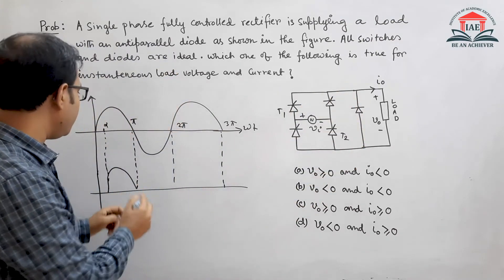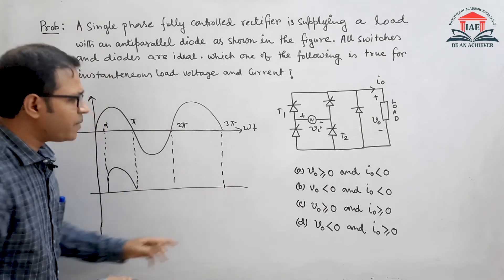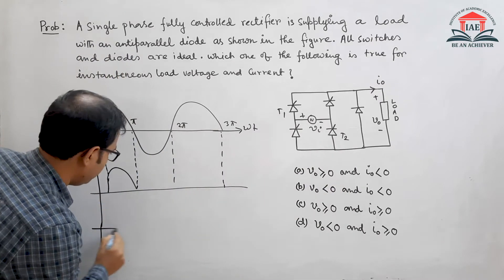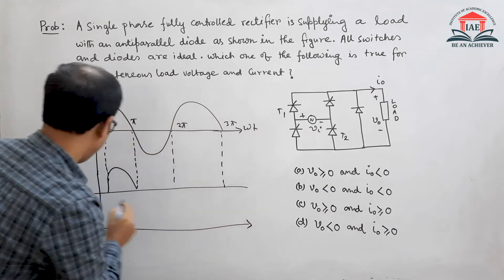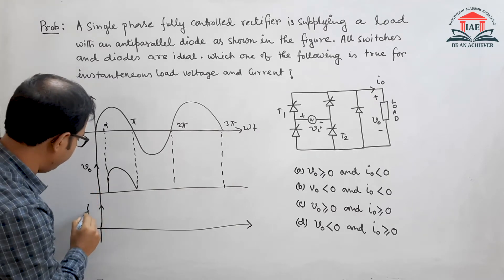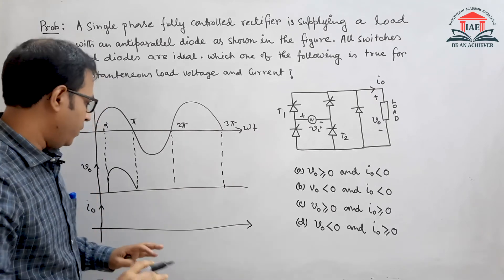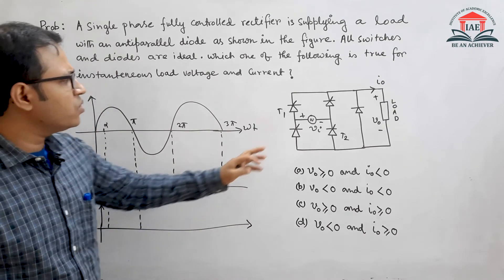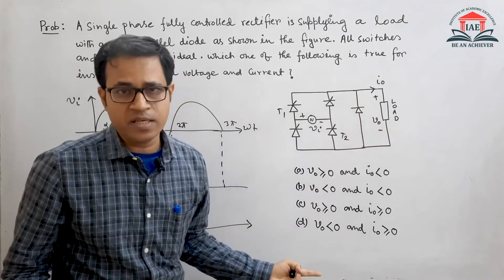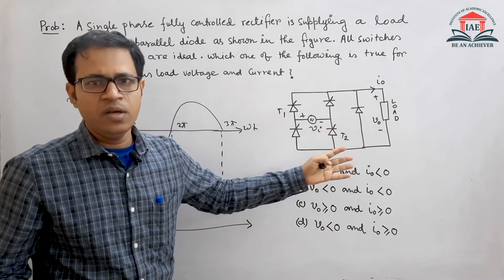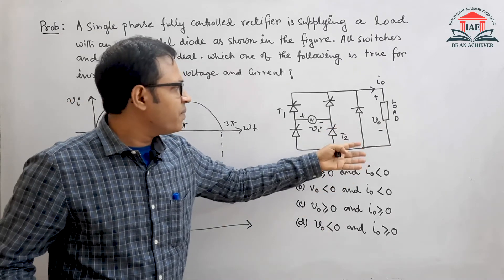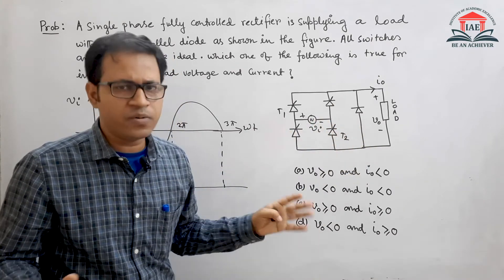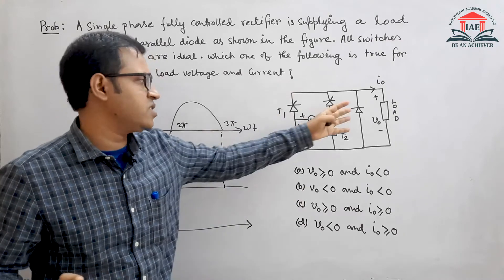So the output voltage equals the input voltage. Now we also have to find out the status of the output current. On this axis we will draw output voltage, and here will be our output current. This is the alpha point and this is the pi point. We do not know what type of load is connected — they have not told us. We have to consider whether it is purely resistive or there is an inductance present, considering both cases.